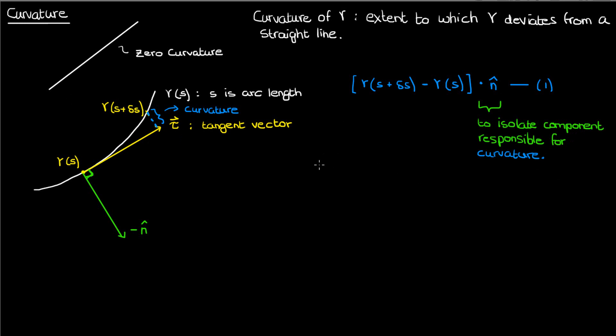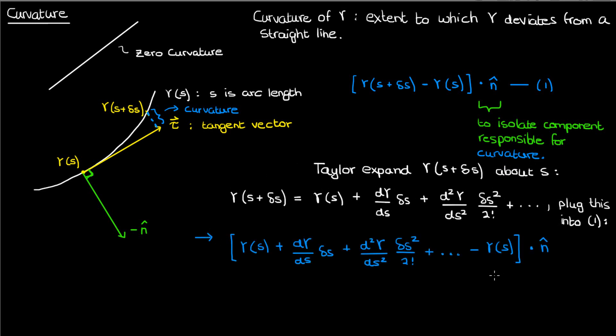Now how will we find a nice expression for the curvature? Well we'll try to get rid of the gamma of s plus delta s by applying a Taylor expansion of gamma of s plus delta s about s. If we do that we'll get the zero order term plus this first derivative term plus the second derivative term and so on. If we plug in this Taylor expansion into our expression 1 here's what we'll get. And let's simplify this: we'll cross out the gamma of s's and we'll ignore the higher order terms by assuming that delta s is very small and that we're basically taking the instantaneous curvature at gamma of s. In addition, because d gamma by ds is in the same direction as the tangent vector, its dot product with the normal is 0 because it's perpendicular to the normal. That just leaves us with the second order term which is the second derivative of gamma with respect to s times delta s squared over 2.